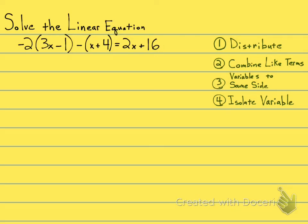Step 1: Let's distribute. Here we go. We'll distribute the negative 2. Negative 2 times 3x is going to be negative 6x. Negative 2 times negative 1 is going to be positive 2.